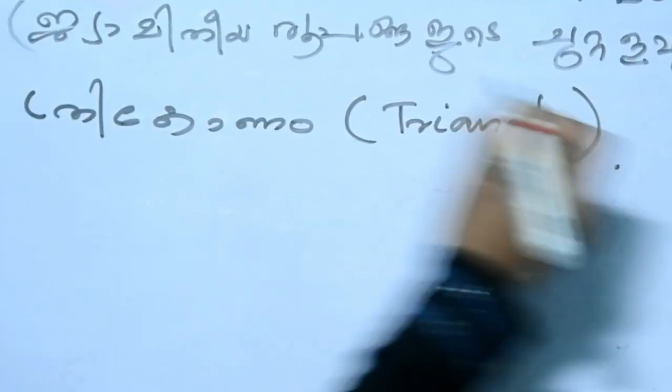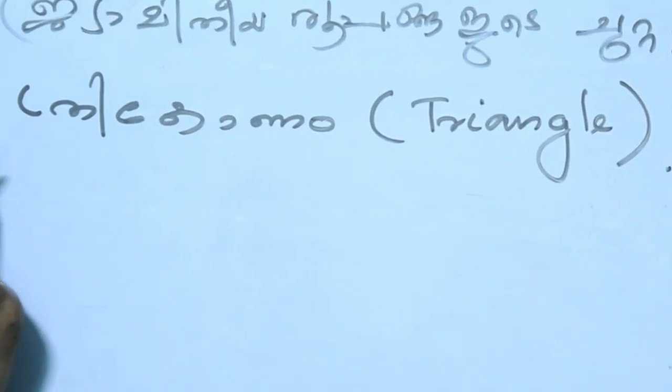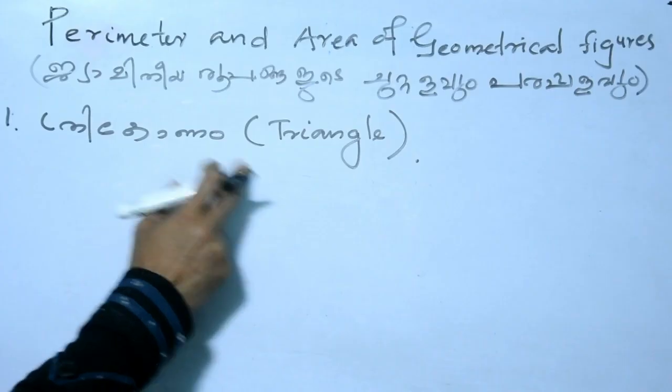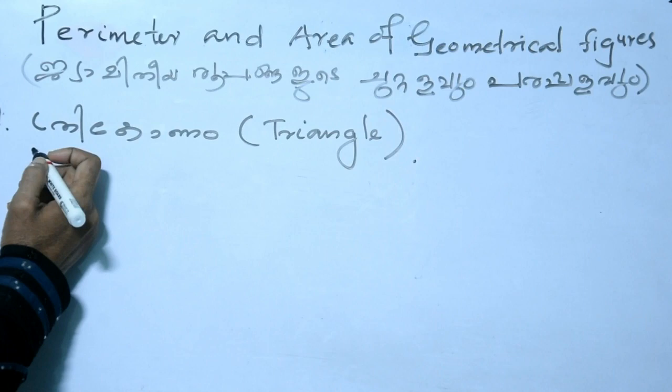Welcome to Mass Classroom. Trigones — that is, Triangles — there are three of us, meaning three types of triangles.